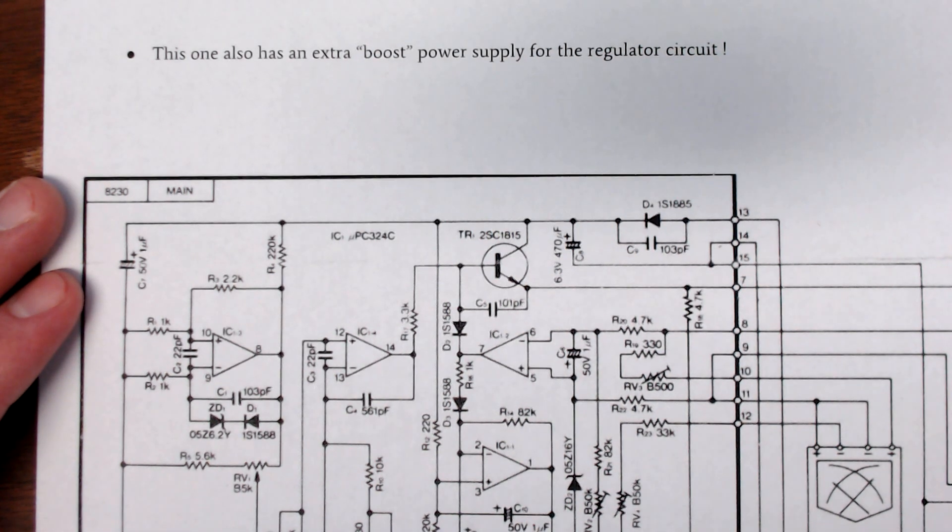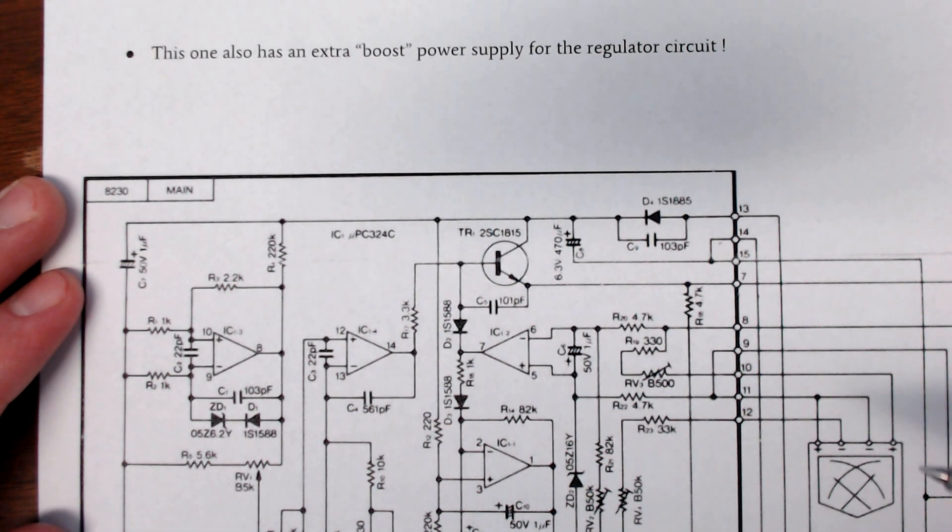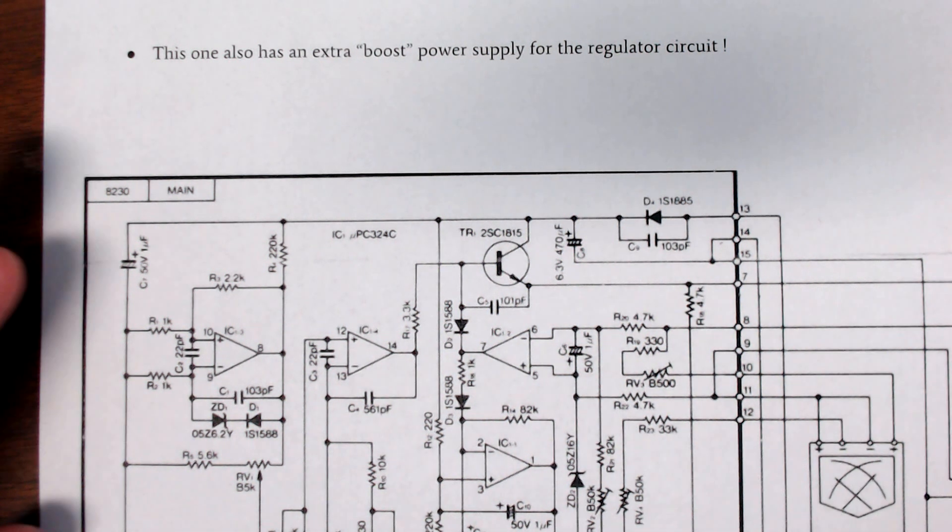This is the same schematic, or the bigger view of the schematic, for the Tenma 72630, that 30 amp 15 volt power supply.